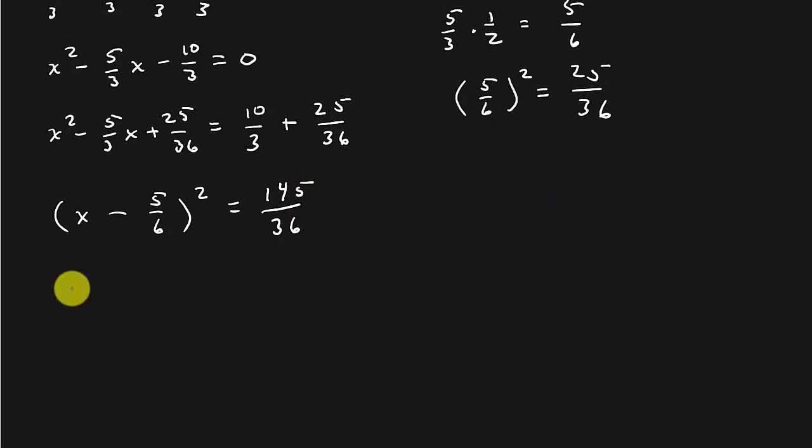We square root both sides. So that's x minus, remember the square root property, minus 5 over 6 is equal to plus or minus the square root of 145 over, I was fixing to write 36 down, over 6.